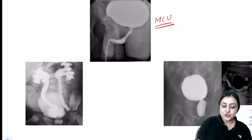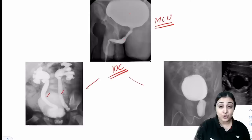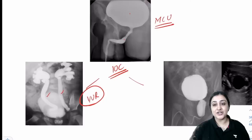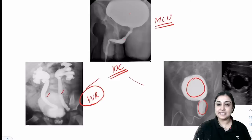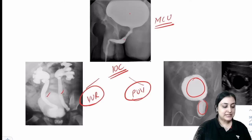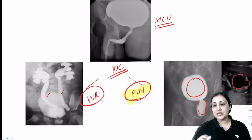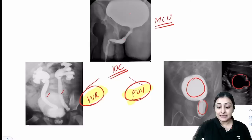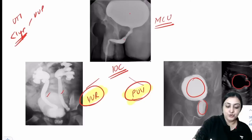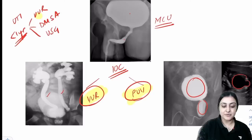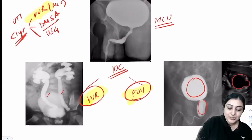MCU (micturating cystourethrogram): investigation of choice for VUR (vesicoureteric reflux — contrast goes up the ureter) and PUV (posterior urethral valve — dilated posterior urethra + distended bladder). PUV antenatal finding on ultrasound: keyhole sign. PUV = most common cause of congenital obstructive uropathy. VUR = most common cause of UTI in children. Any child under 1 year with UTI: do MCU (rule out VUR), DMSA (cortical scarring), and ultrasound. Age 1–5 years: MCU + ultrasound. Over 5 years: ultrasound only.